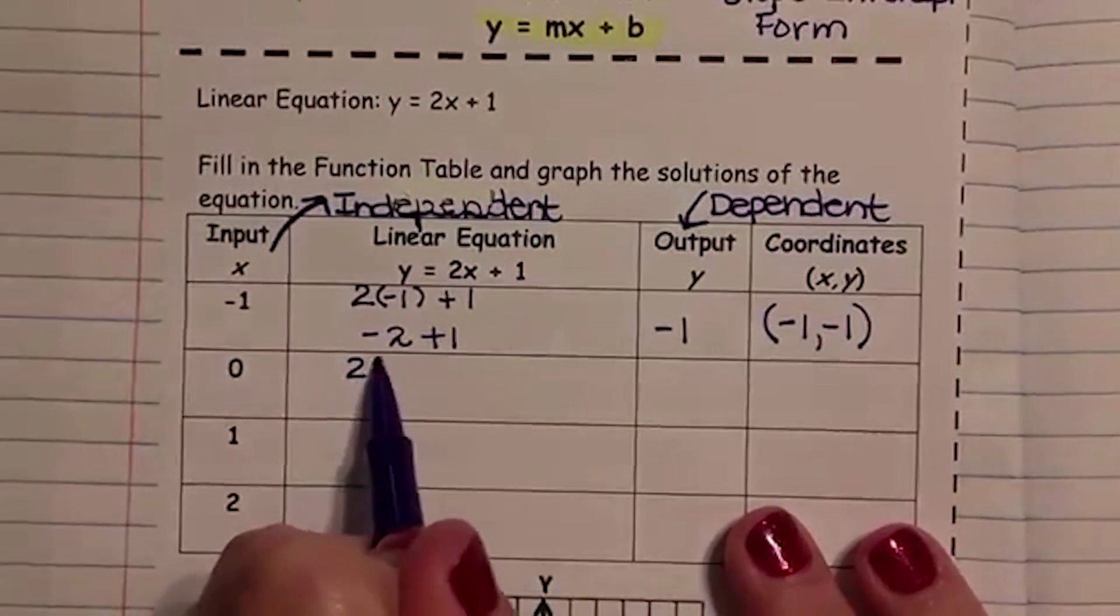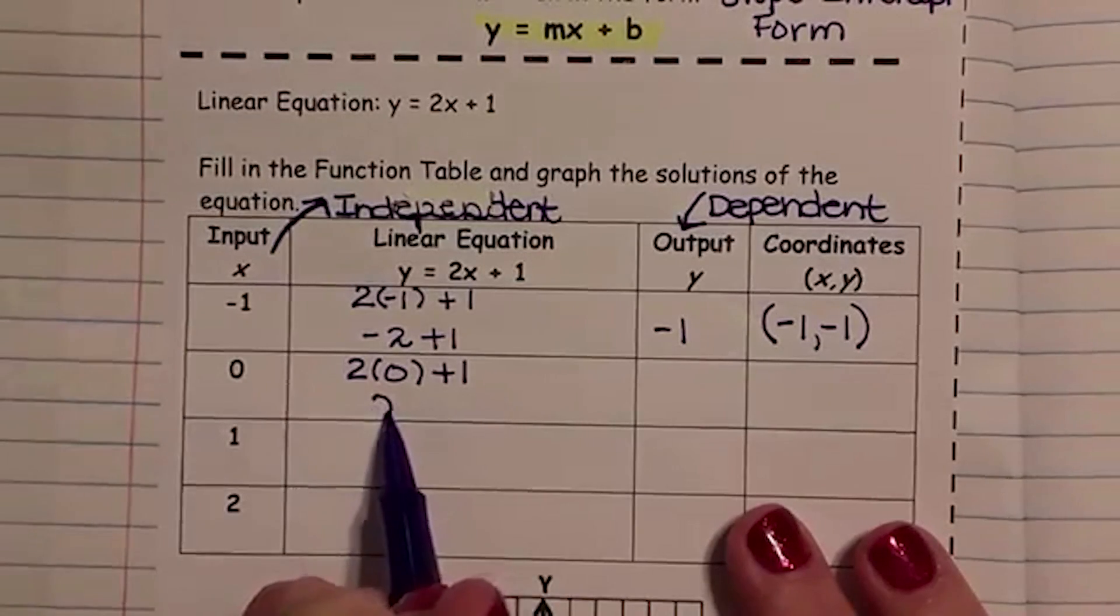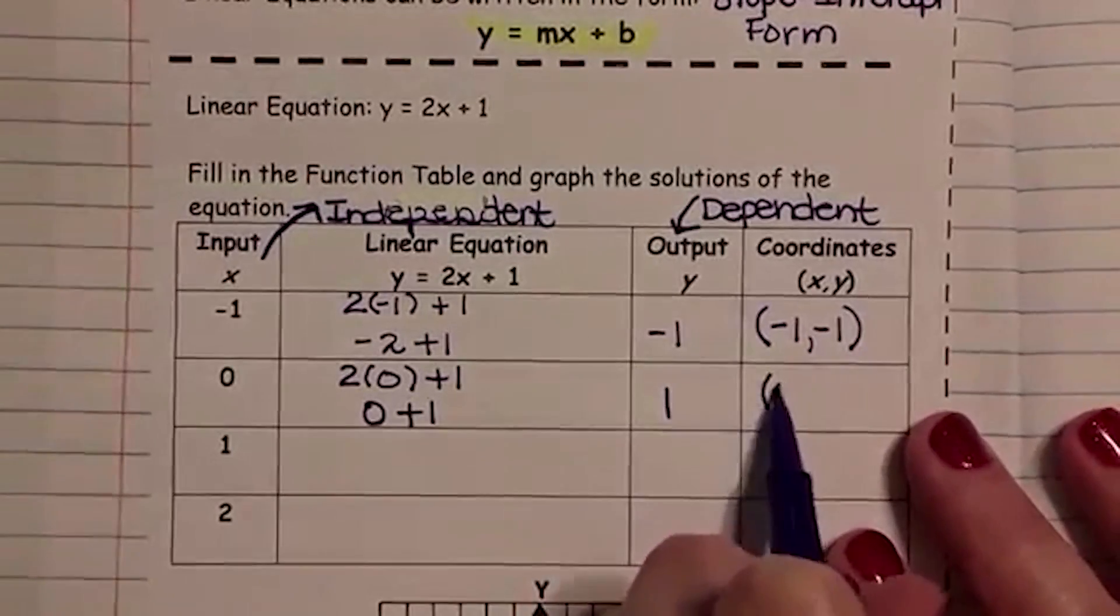You're going to go to the next one. 2 times 0 plus 1. Anything times 0 is 0. So 2 times 0 is 0. 0 plus 1 is 1. Next coordinate. 0, 1.